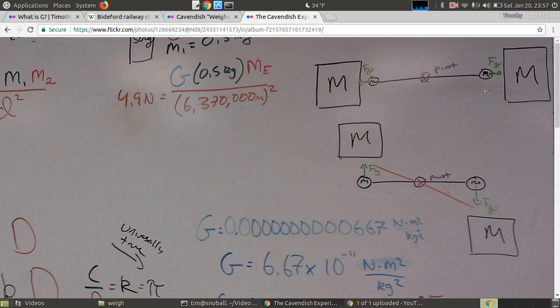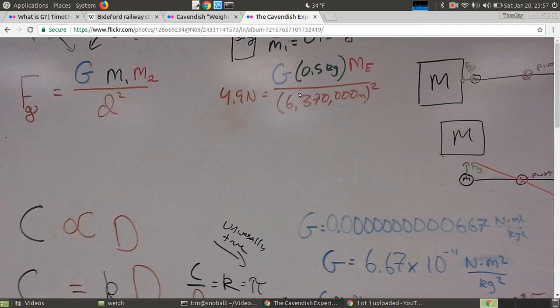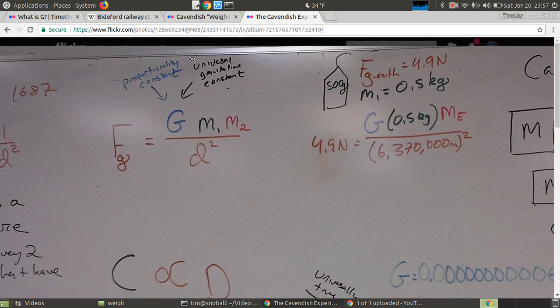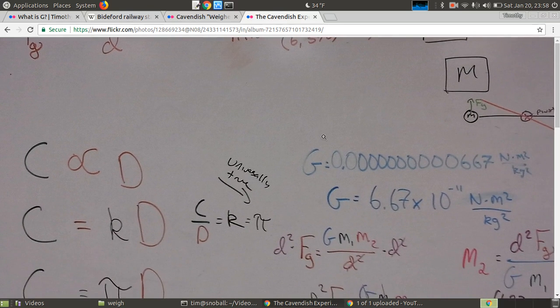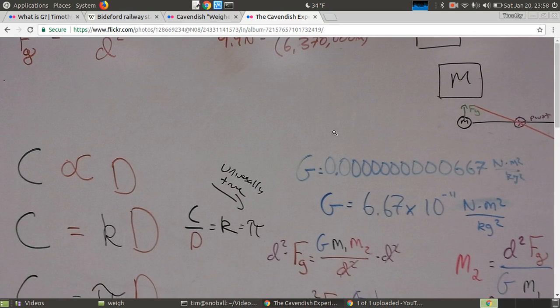Cavendish obtained a value for big G of 6.67 times 10 to the minus 11th. I have that written out here, not using scientific notation, and it's pretty obvious that it's a tiny, tiny number. That's our explanation of why we don't notice people pulling on each other gravitationally. If M1 and M2 are, say, 60 kilograms and 70 kilograms, you multiply that by this tiny little number, it's going to make the force essentially zero. That's why we don't notice it.